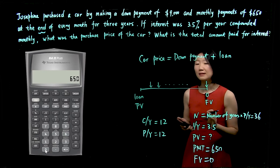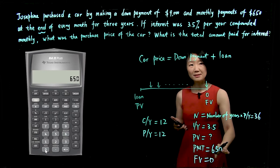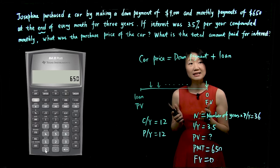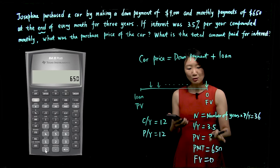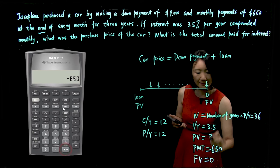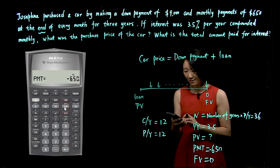For Josephine, 650 monthly payment for her is money leaving her. You can also consider as cash outflow. So we should use negative for PMT. Let's put a negative there. Future value is zero.